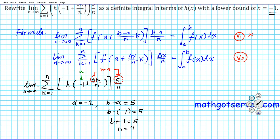So this Riemann sum can be written as a definite integral from a to b. A is negative 1, all the way to 4, of h of x dx. We're using h because that's the function we have in the original expression.